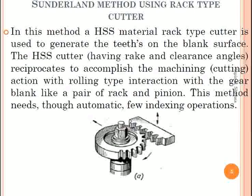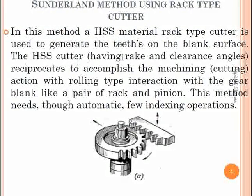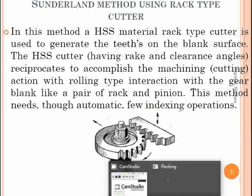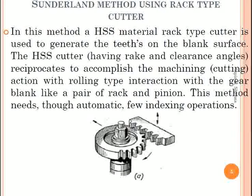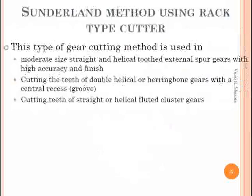The first gear generation process is the rack-type cutter method. In this method, a rack-type cutter with teeth on it is used, and the workpiece blank is to be cut in the form of a gear. An HSS material rack-type cutter with rack and clearance angles reciprocates to accomplish the machining action with rolling-type motion. The rack reciprocates to cut the teeth on the gear blank, and this method also requires automatic indexing operations.